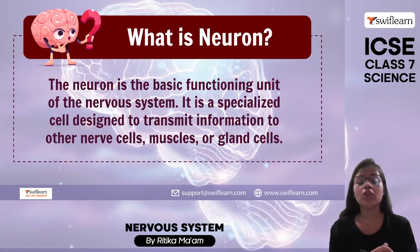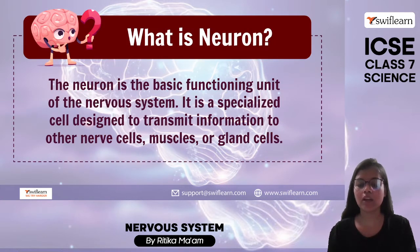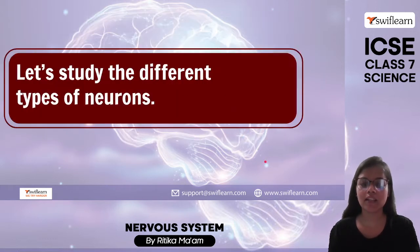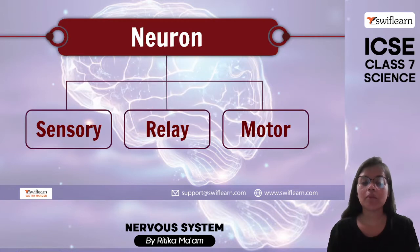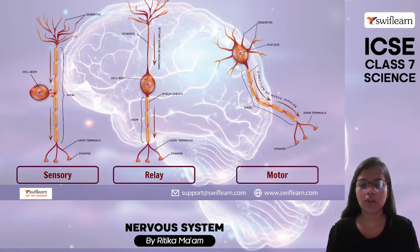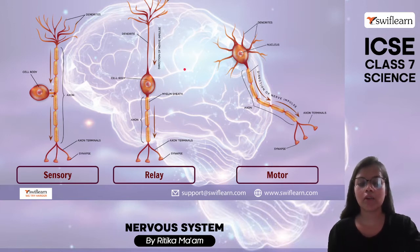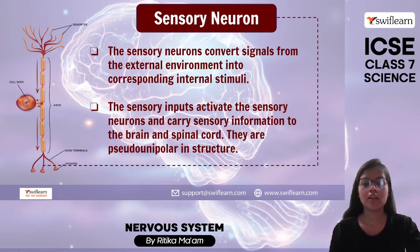Let us have a quick recap. A neuron is the basic functioning unit of our nervous system. It is a kind of specialized cell which is designed to transmit information to other nerve cells, muscles, or gland cells. The different types of neurons we have are sensory, relay, and motor neuron. We can see a diagram showing the structure of sensory, relay, and motor neurons, and we will be studying each type one by one.